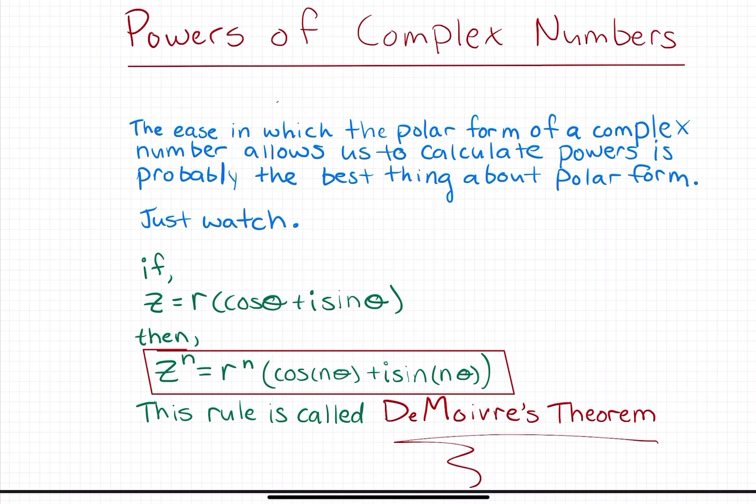This video is going to be called Powers of Complex Numbers. One of the great things about complex numbers is when they're written in polar form, they're really easy to simplify when you raise them to an exponent. Let's say that we have some complex number z in polar form, the CIS form: z equals r cosine theta plus i sine theta.